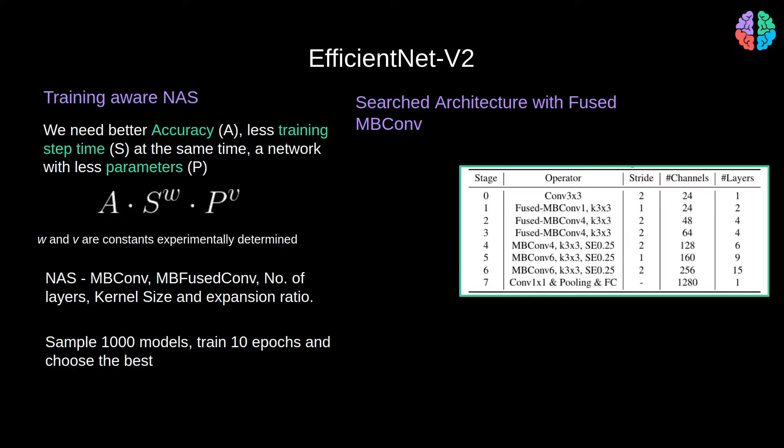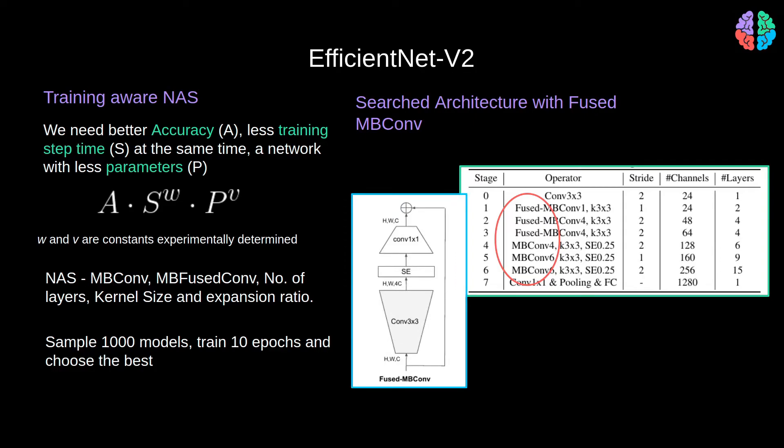So one thing to note is that the early stages where the computation is heavy, the search has somehow picked up fused conv layers and at later stage it has used MBConv, which is computationally expensive. Additionally, whenever it uses MBConv, the kernel size seems to be 3x3 but then the number of layers or the depth seems to increase too in order to compensate for the lost receptive field with 3x3 conv.